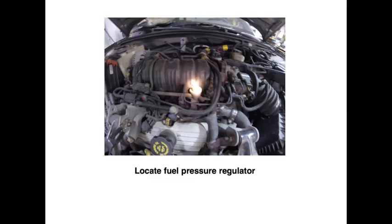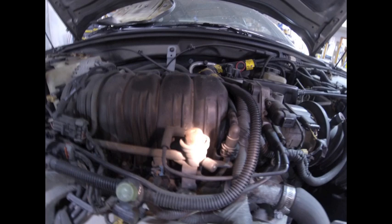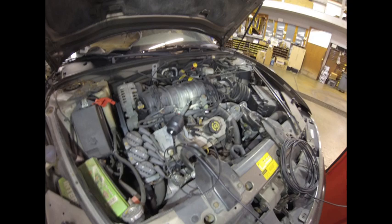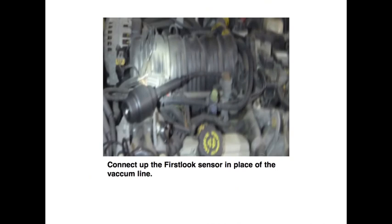Let's start with the fuel pressure regulator on a GM product. The fuel pressure regulator uses a diaphragm design to increase fuel pressure up to 10 psi under load low vacuum conditions. Connecting our First Look to the vacuum port of the sensor with no vacuum applied, we can observe pressure changes in the fuel rail while running or cranking. Here, we will disconnect the vacuum line. Next, we will connect the First Look to the vacuum connector of the fuel pressure regulator. Here, you will see the tool connected.